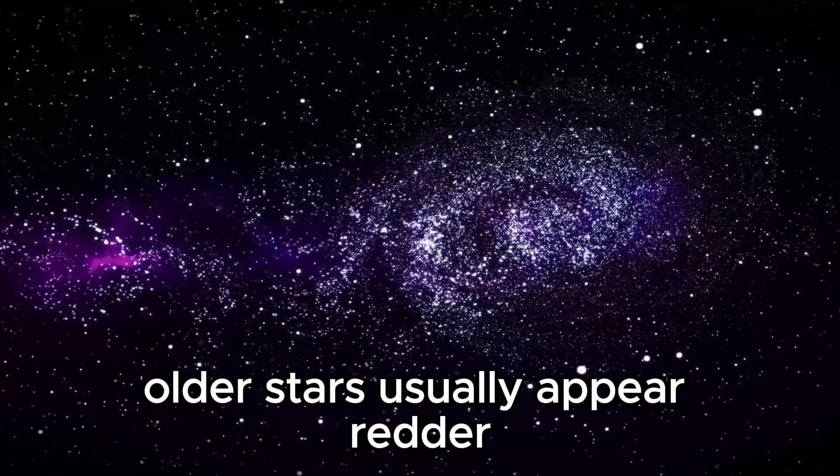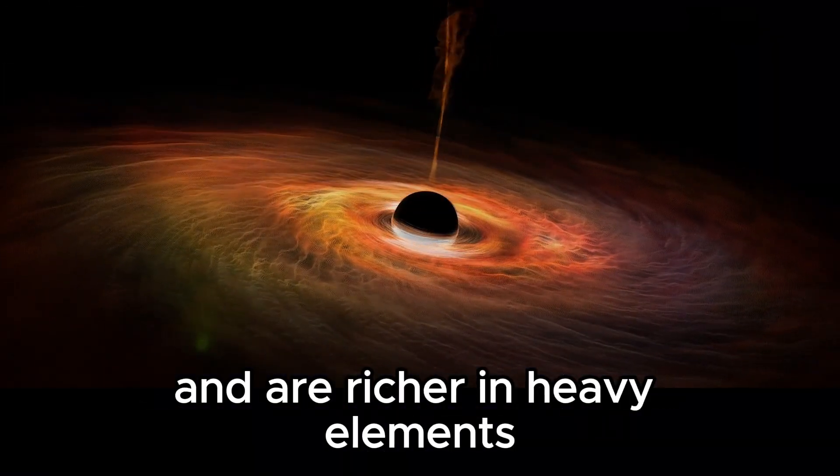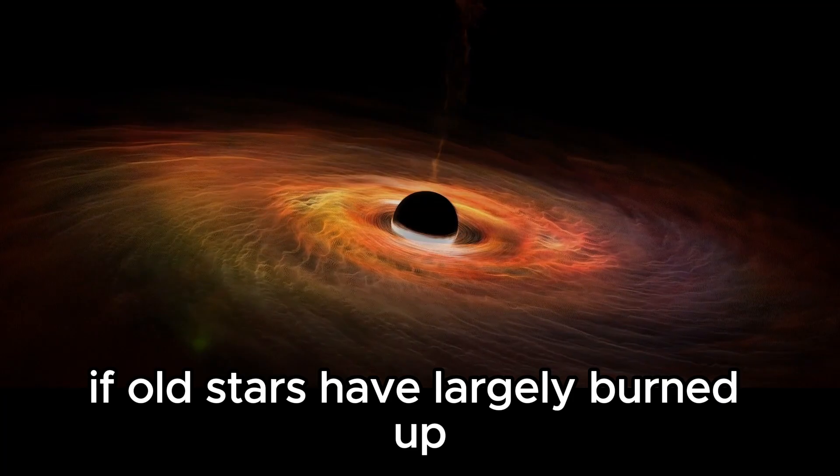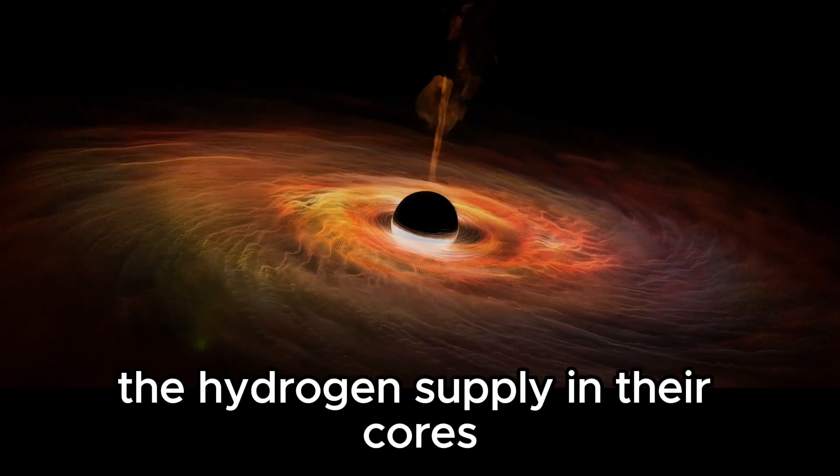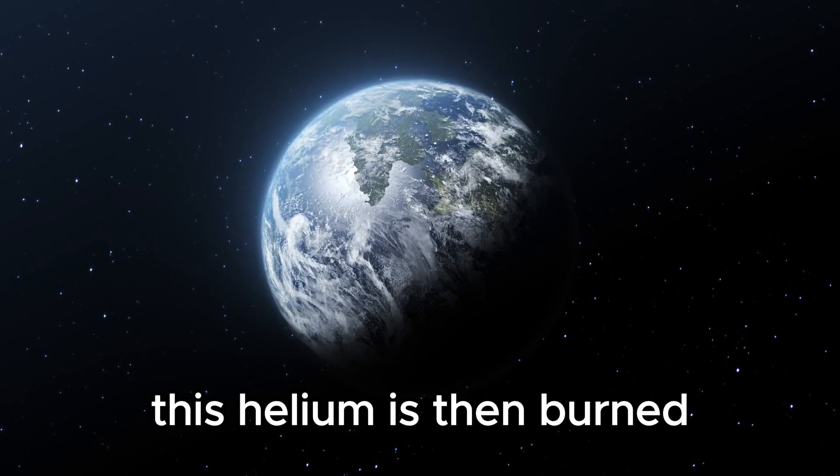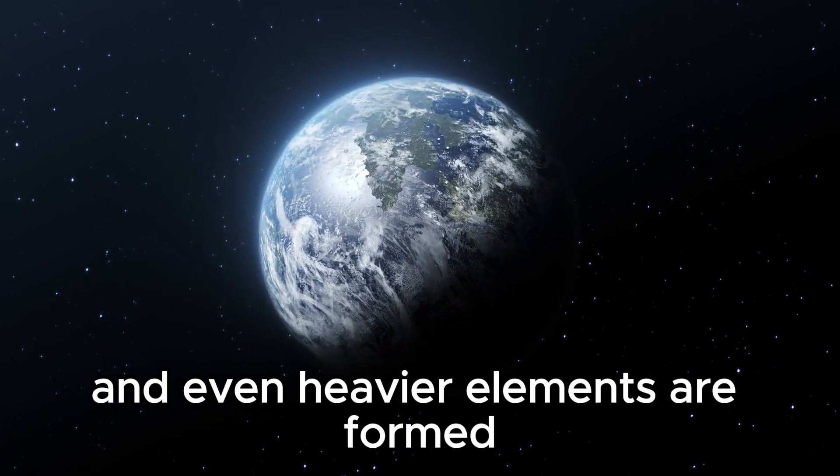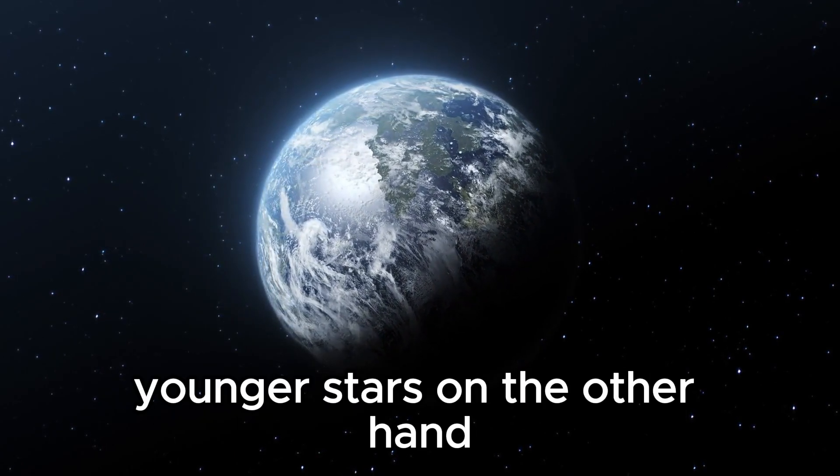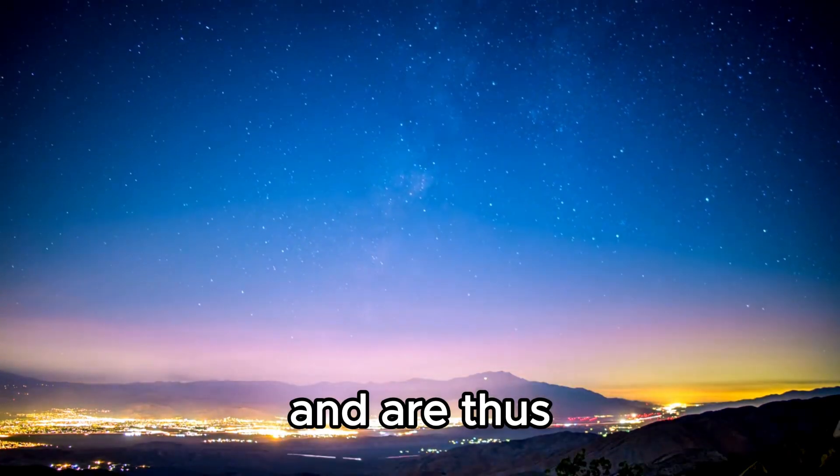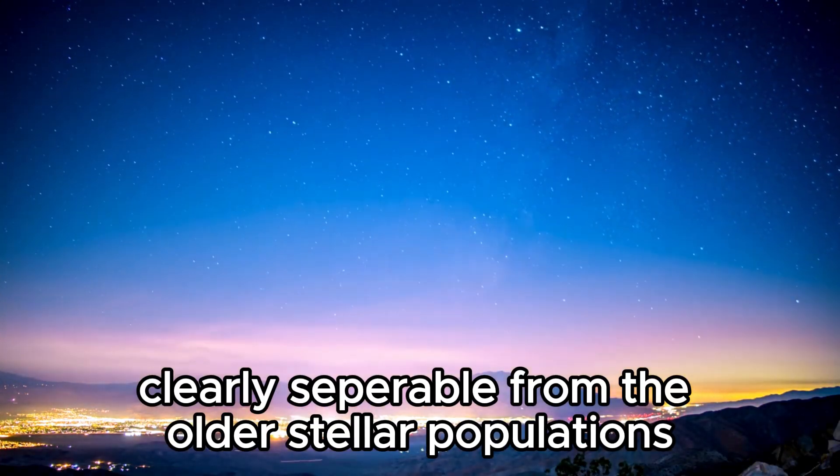Older stars usually appear redder and are richer in heavy elements, which astronomers also refer to as metals. If old stars have largely burned up the hydrogen supply in their cores by fusing it all into helium, this helium is then burned and even heavier elements are formed. Younger stars, on the other hand, are still dominated by hydrogen and some helium and are thus clearly separable from the older stellar populations.